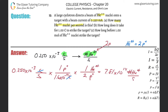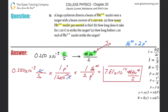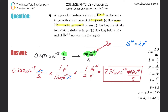per single second. That's the answer for Part A. Now letter B says: how long does it take for one coulomb to strike the target?